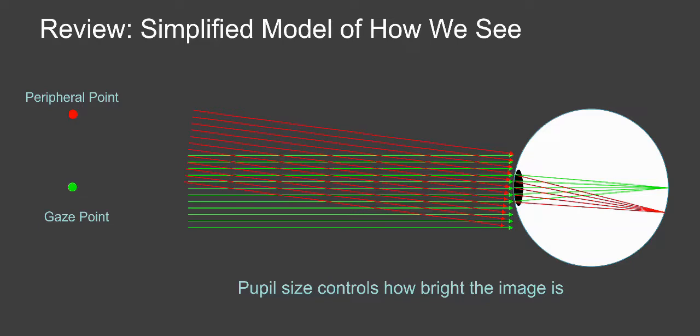This red dot is a peripheral point. Those rays are coming in at an angle, they get focused to a different point on your fovea.